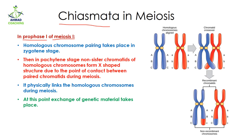In the zygotene stage, homologous chromosomes pair with each other. For example, these two are homologous chromosomes, so they are going to pair with each other. This pairing is very helpful for chiasmata formation.